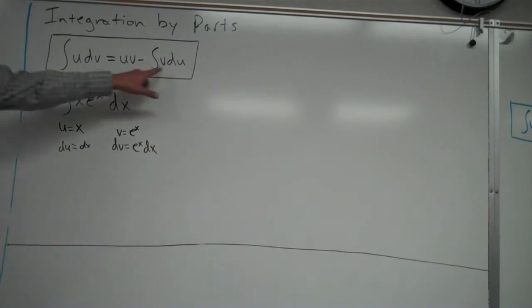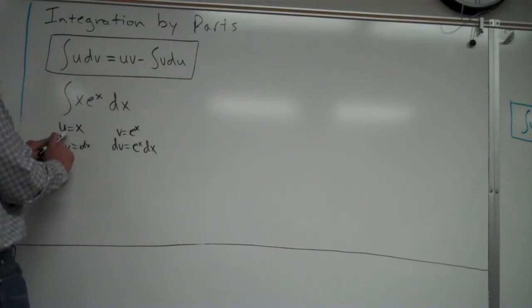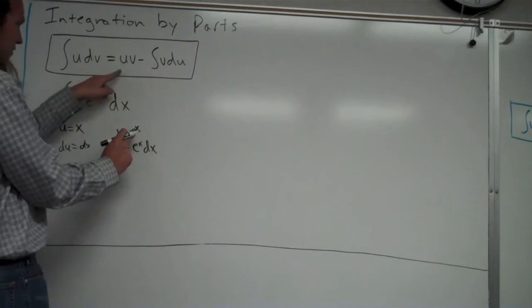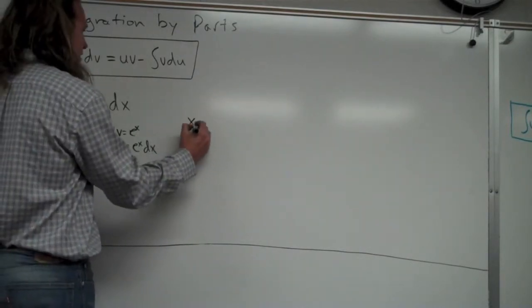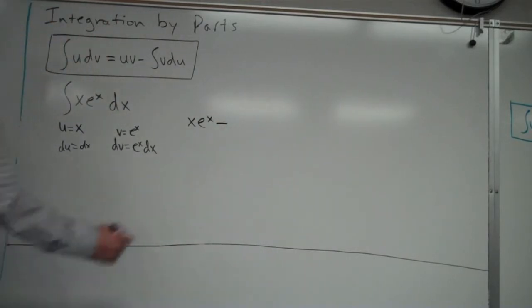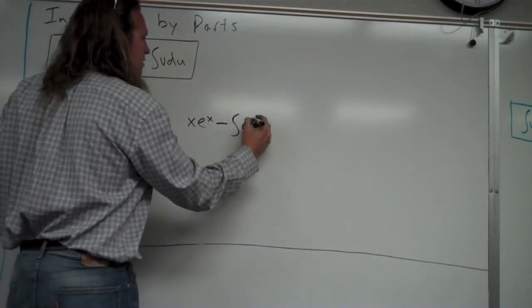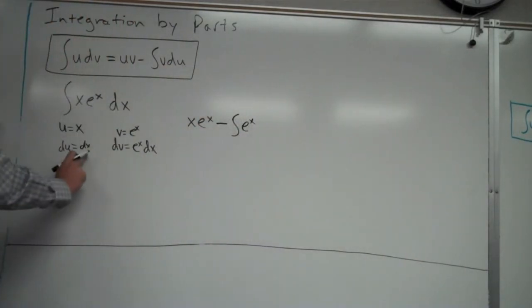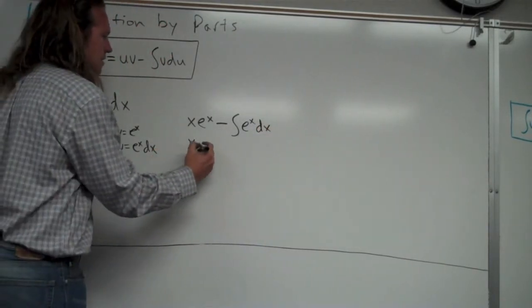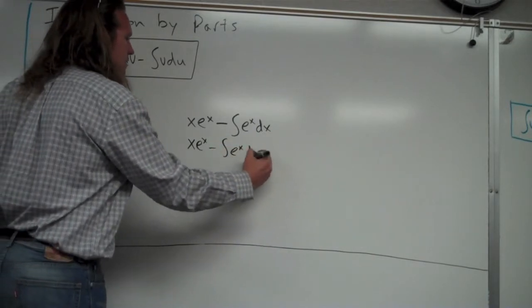And now I'm going to go ahead and plug it into this. So I have u times v. So u is equal to x, v is equal to e to the x. So therefore, I'm going to put x in for u, e to the x in for v, so it'll end up being x e to the x, minus the integral of v du. So v is e to the x. du is dx.